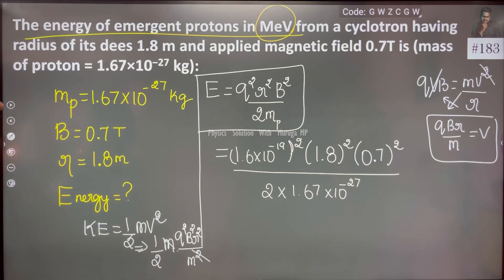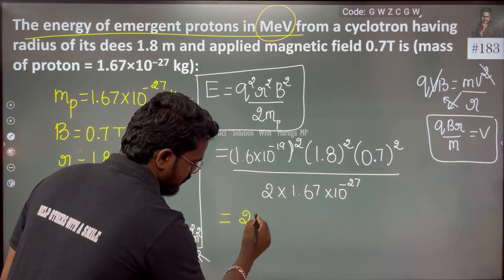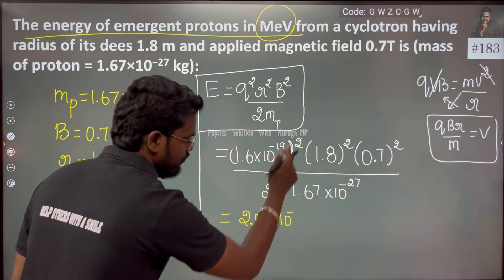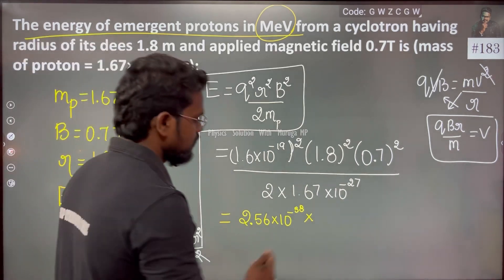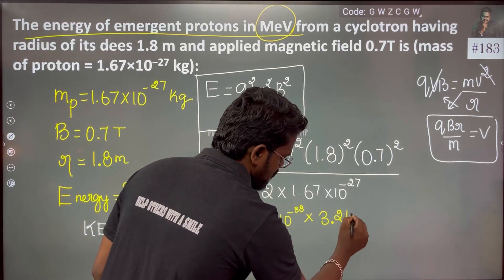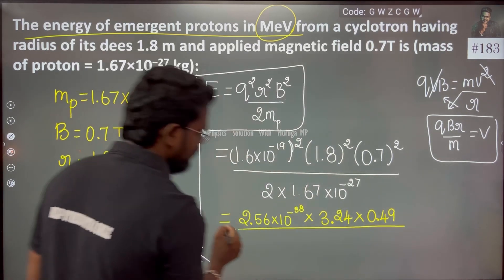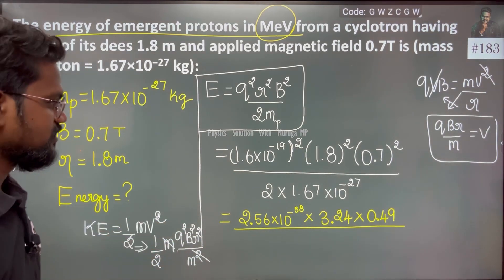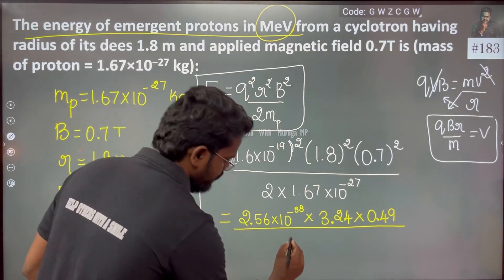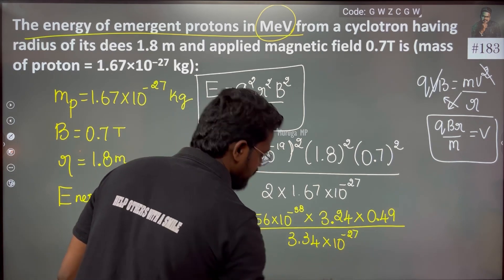Computing the numerator: 1.6 × 1.6 = 2.56 × 10⁻³⁸. Then 1.8 × 1.8 = 3.24. Then 0.7 × 0.7 = 0.49. The denominator is 2 × 1.67 × 10⁻²⁷ = 3.34 × 10⁻²⁷. So the overall value gives 10 to the power of minus 11.